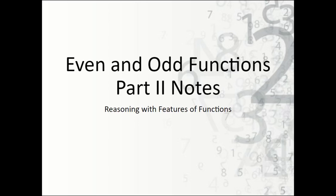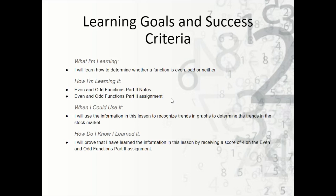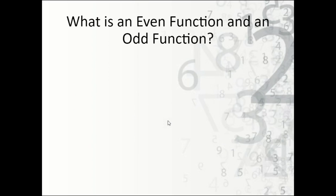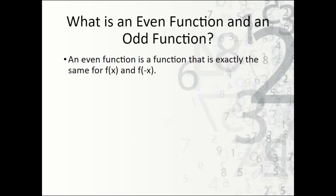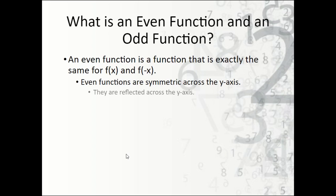Let's take a look now at the even and odd functions part 2 notes. The notes begin with the learning goals and success criteria. So what is an even function? An even function is a function that is exactly the same for f of x and f of negative x. Even functions are symmetric across the y-axis, so on each side of the y-axis you should see a direct reflection or mirror of the function.